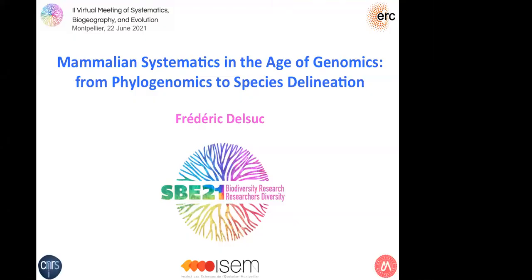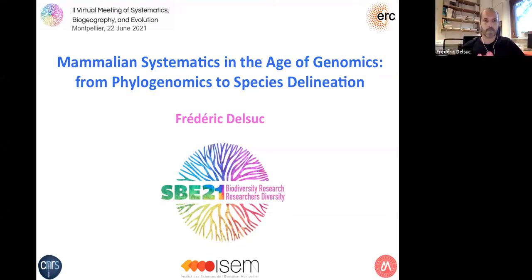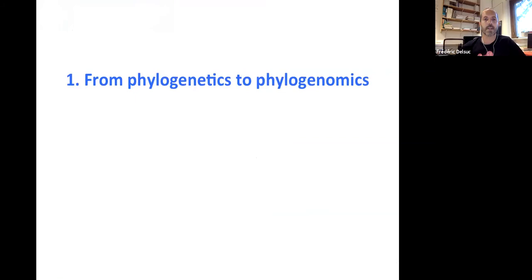Thank you so much for inviting me to this nice symposium. I'm going to share my screen. So I'm going to be talking about Mammalian Systematics in the Age of Genomics tonight — it's night here. I will be speaking more specifically about our efforts to get some genomes and to perform phylogenomics and species delineation in carnivores. First, I will give you a short introduction about the transition from phylogenetics to phylogenomics in the field of mammalian systematics.